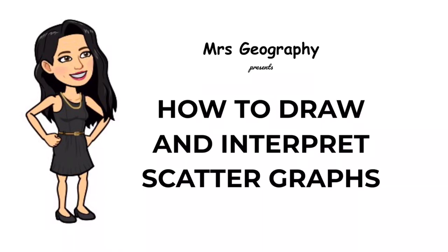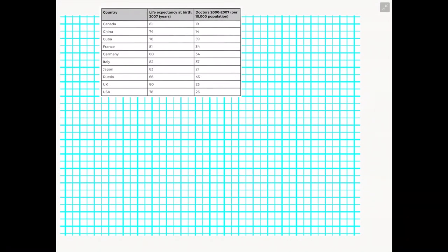Hi everyone, welcome back to my channel. In this video we're going to look at how to draw and interpret scatter graphs. So when it comes to scatter graphs, they require two sets of data. And what we are looking for is whether these two sets of data have any relationship or correlation between them.